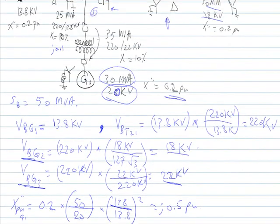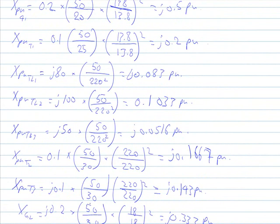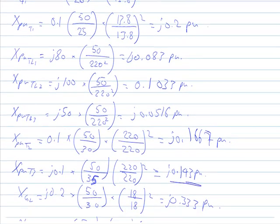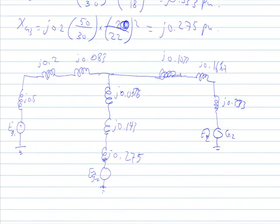Also for transformer number three, the MVA rating is 35 — verify this in the diagram. After checking all values, we draw the reactance diagram for the circuit. This is the simplified equivalent circuit, representing each component by its per-unit reactance, with all previously calculated values plugged in for each component.